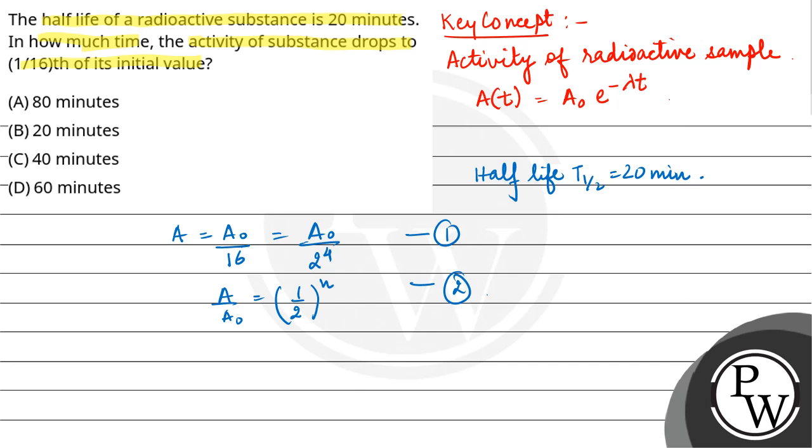So by comparing first and second, you get n equals 4, which means the activity drops to 1/16th in 4 half-lives. Therefore, t equals 4 half-lives, which equals 4 times 20, equals 80 minutes. Hope you understood it well, best of luck.